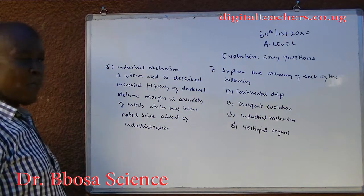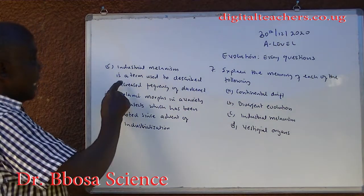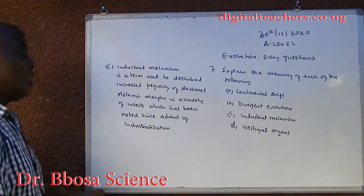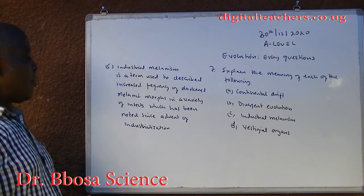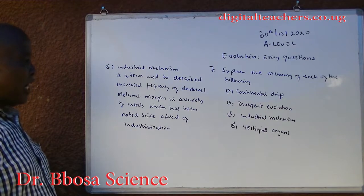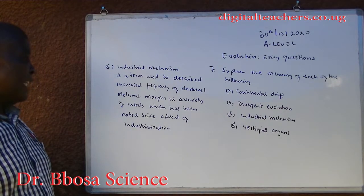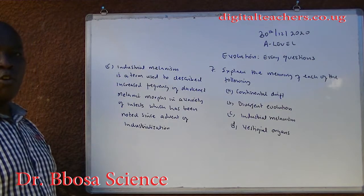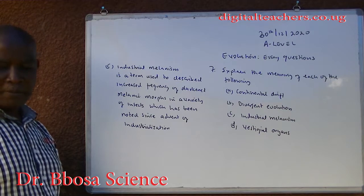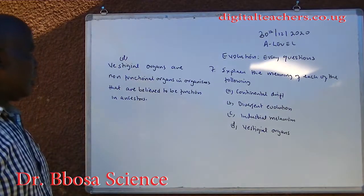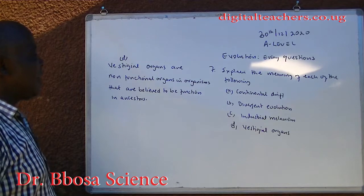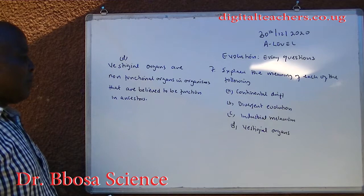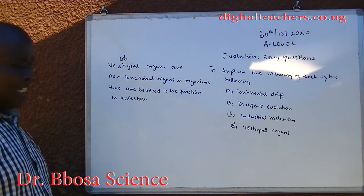C. Industrial melanism is a term used to describe the increased frequency of darkened melanic morphs in a variety of insects, which has been noted since the advent of industrialization. D. A vestigial organism is a non-functioning organ in organisms that is believed to have been functional in ancestors.